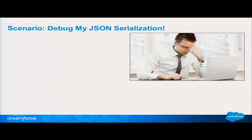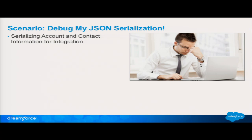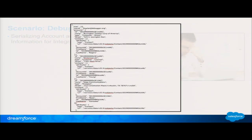Trigger scenario — anyone here work with JSON serialization or deserialization? It's fun, right? Very difficult, headache-inducing. So I've got a trigger that's going to serialize out my account and contact information. It's going to ship it off to another endpoint for integration purposes. It's going to look something like that — if you can squint hard enough, you might see some of your friends like Burlington Textiles Corp and Edge Communications.